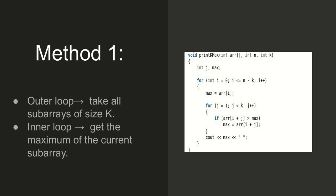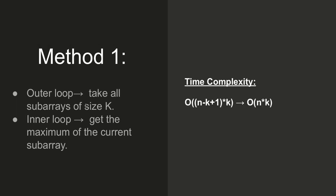Method 1 to solve this problem is to use two nested loops. The outer loop takes all the subarrays of size k and the inner loop finds the maximum in each subarray. The outer loop runs from 0 to n-k, and for each window beginning at index i, we find the maximum by running a loop from j equals 0 to less than k. This method has time complexity O(n * k).